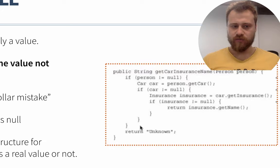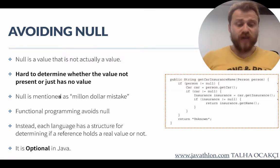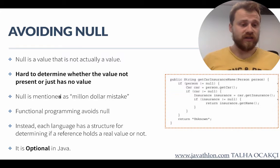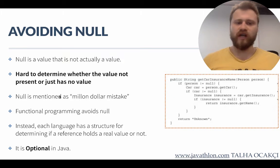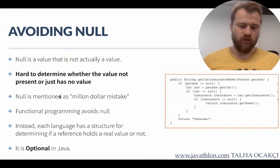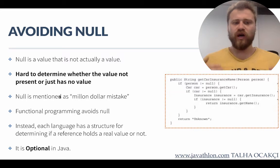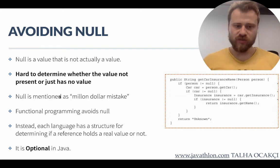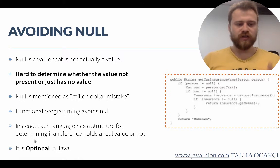Null is referred to as a 'million dollar mistake' because every application in every language has null pointer exceptions — it's not specific to Java. In every language we have a null construct. In functional programming, we avoid null values by using a different class.